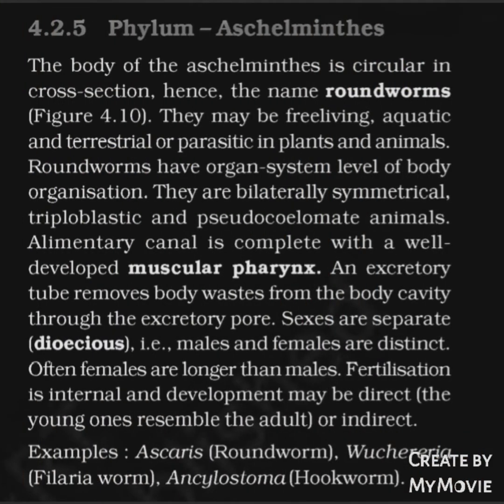Phylum Aschelminthes: The body is circular in cross-section, hence the name roundworms. They may be free-living aquatic, terrestrial, or parasitic in plants and animals. They have organ system level of organization, are bilaterally symmetrical, triploblastic, and pseudocoelomate. The alimentary canal is complete with a well-developed muscular pharynx. An excretory tube removes body waste through the excretory pore. Sexes are separate (dioecious) and females are often longer than males. Fertilization is internal; development may be direct or indirect. Examples: Ascaris (roundworm), Wuchereria (filarial worm), and Ancylostoma (hookworm).